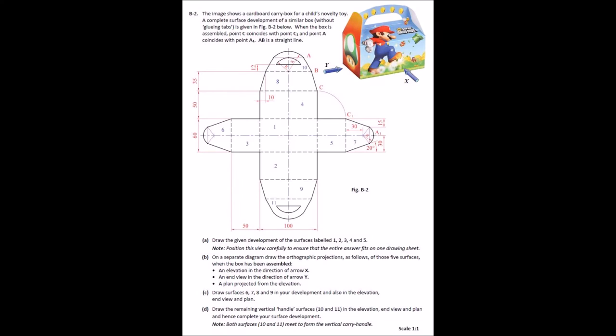B2 then, first thing I'm thinking of is why. So this is basically surface development. And reading through it, it's a grand question. You have basically you're doing an orthographic projection, an elevation plan in view. You're doing development on another side. The note there in A, position the view carefully to ensure that the entire answer fits in one drawing sheet. So it's kind of badly laid out with regard to, now I know you're supposed to read through the question fully, but I know some people will just kick in and start drawing.